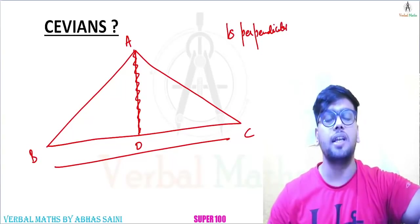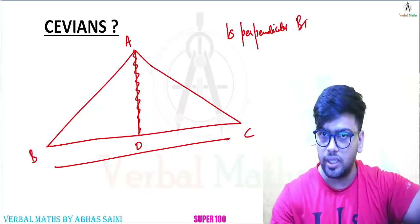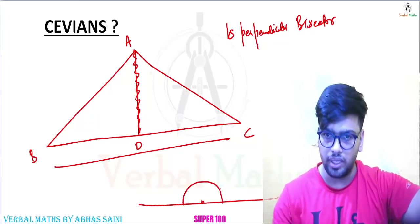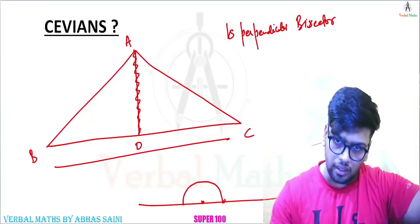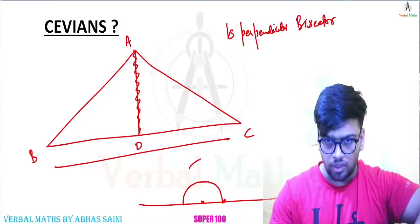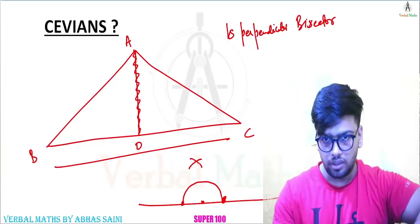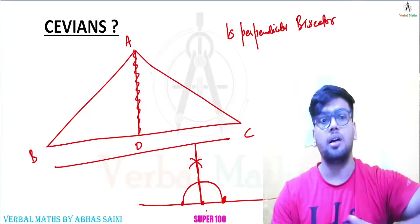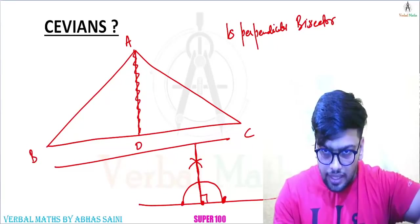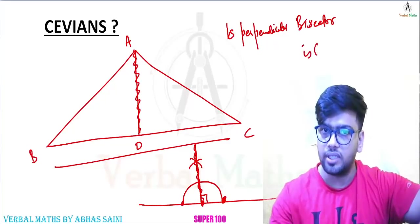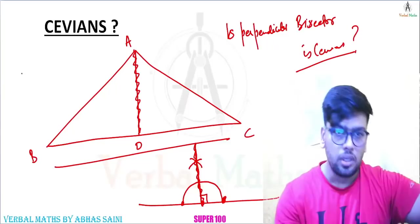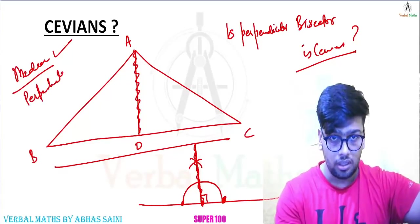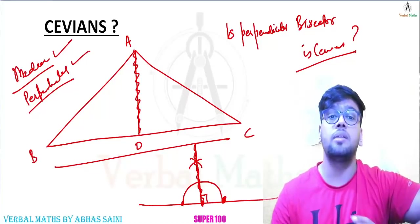I am asking — is a perpendicular bisector a Cevian? A perpendicular bisector is constructed by keeping a compass on the line, opening it more than half, drawing arcs from both ends, and joining the intersection points with a straight line. So is a perpendicular bisector a Cevian? Your answer must be no. A median is a Cevian — yes. A perpendicular drawn from a vertex is also a Cevian, but a perpendicular bisector is not a Cevian.